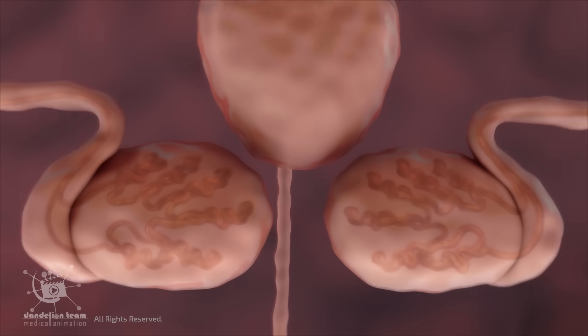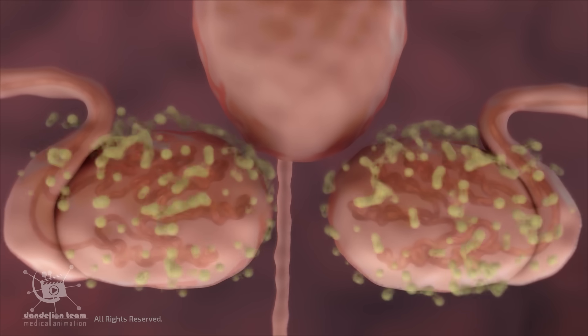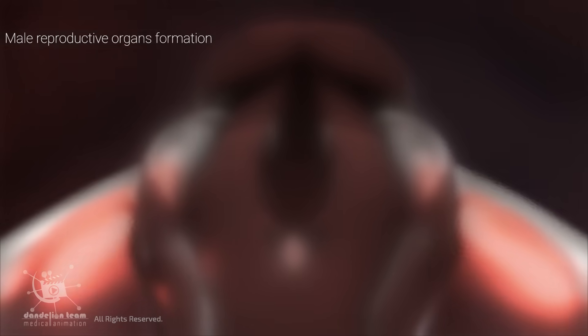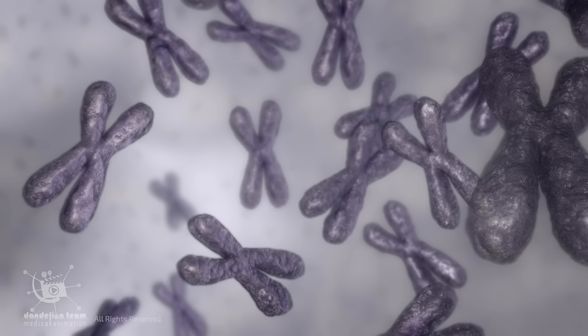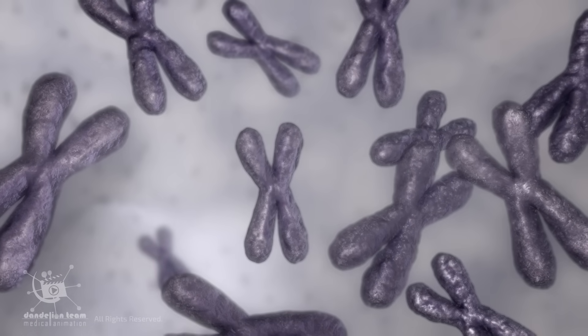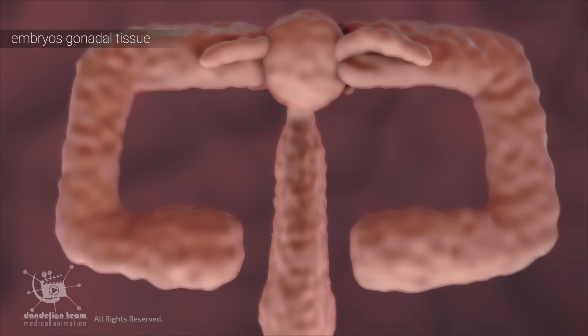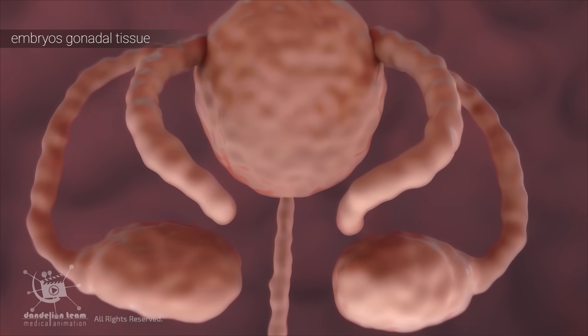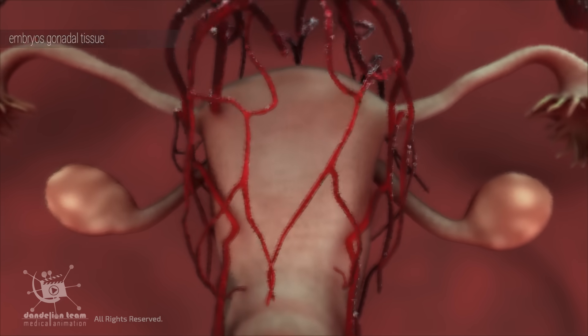The testes then release hormones, including testosterone, which directs the development of male reproductive organs. If the embryo does not have a Y chromosome, indicating a female, the gonadal tissue develops into ovaries. The absence of certain hormones leads to the development of female reproductive structures.